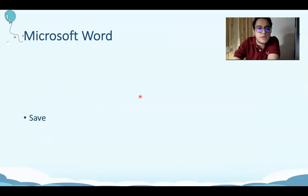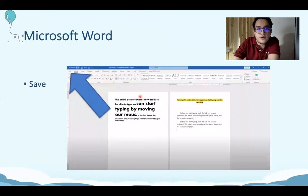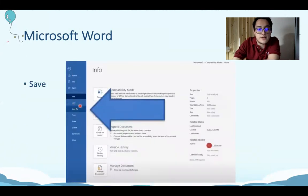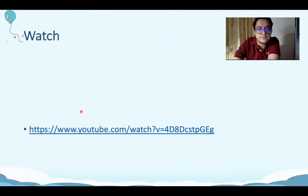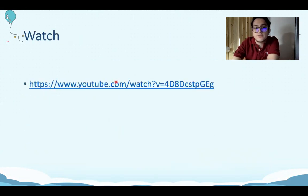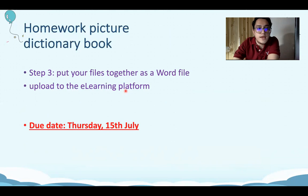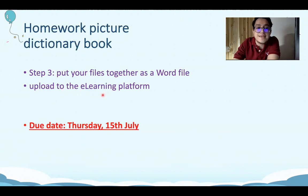Let me explain how to save in Word. All you need to do is go to your File tab on the top, click on it, and you can save. You just either click Save or Save As. Next, I want you to watch some videos — they will help you to understand more. And as your homework for next week, I want you to put all your files together as a Word file and upload the Microsoft Word file to the e-learning platform.